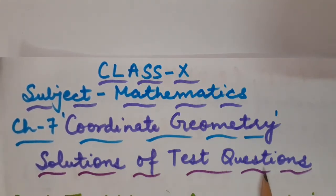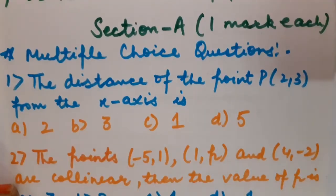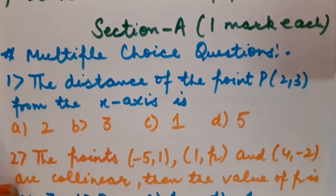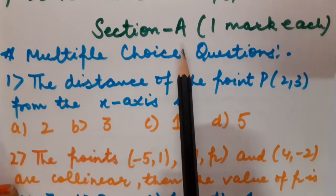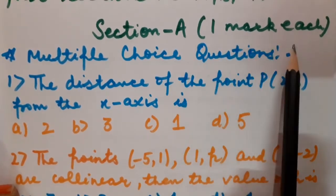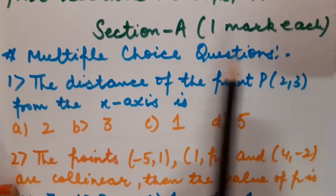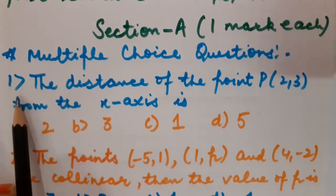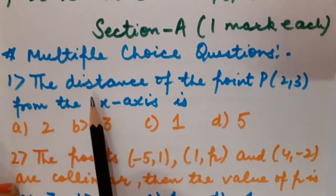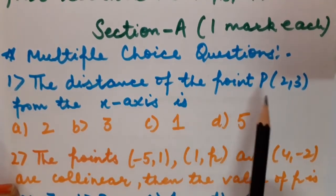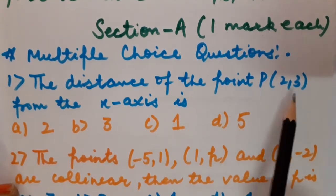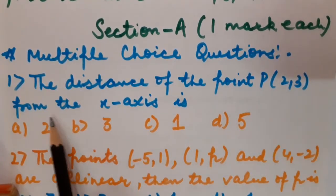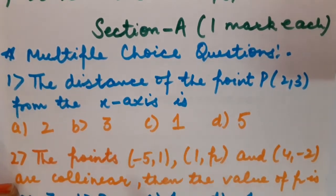Solutions of test questions I am going to discuss with you. Let us start discussion, children. First of all, section A, in which one marker questions were there and all the questions were MCQs. So let us start the very first question: the distance of the point P(2,3) from the x-axis is?